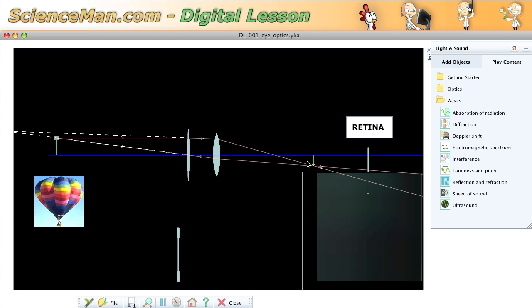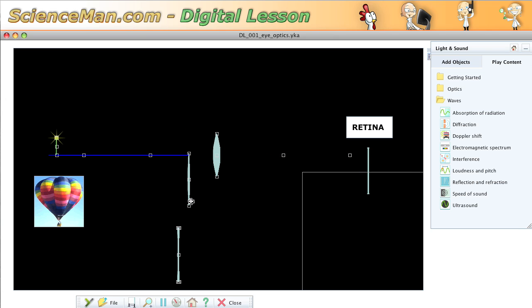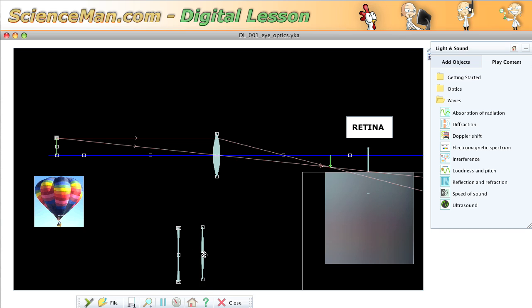We want the image to fall on the retina. So what we need I think is some way of spreading the light rays out before they reach the lens, and that will make them converge further back near the retina.